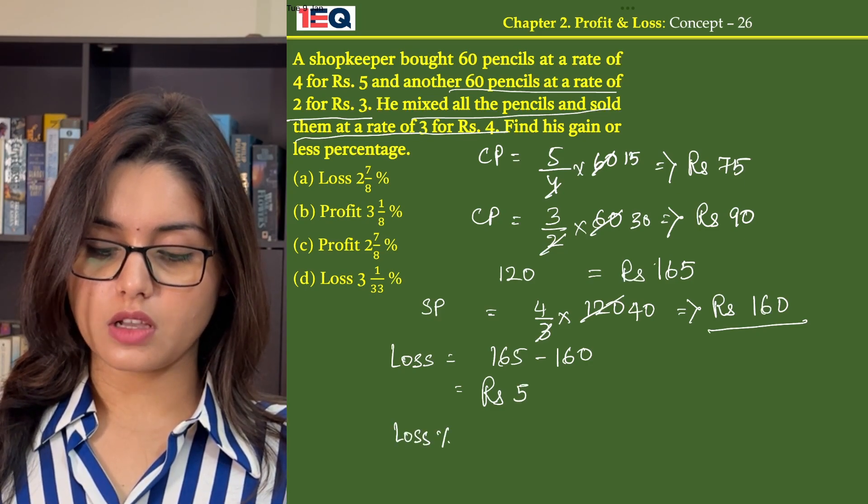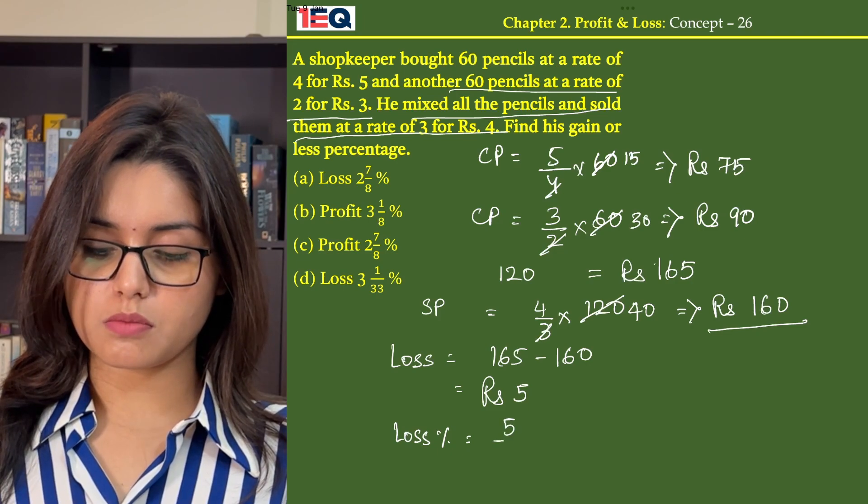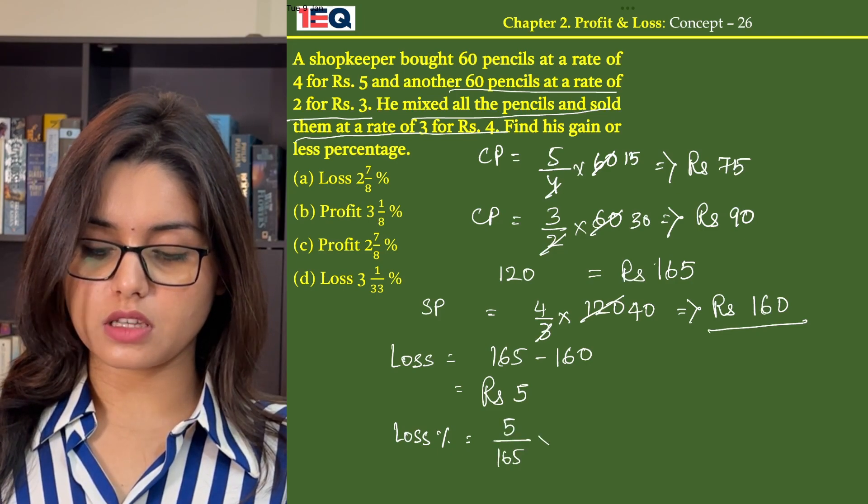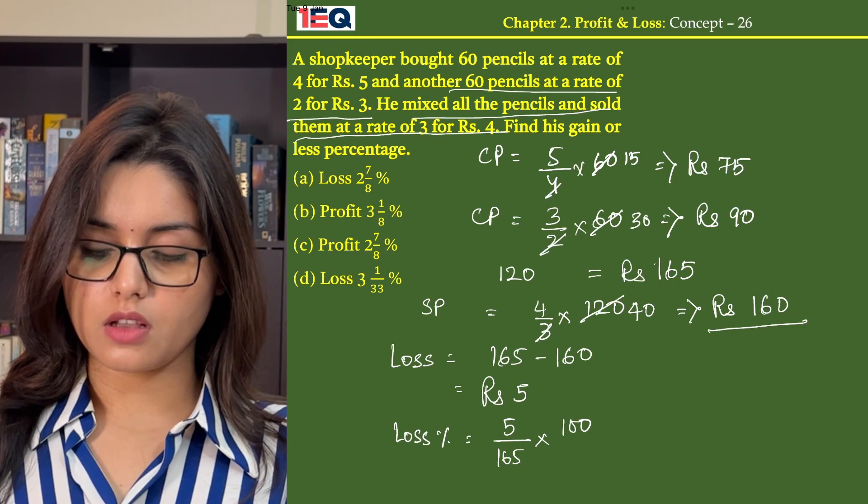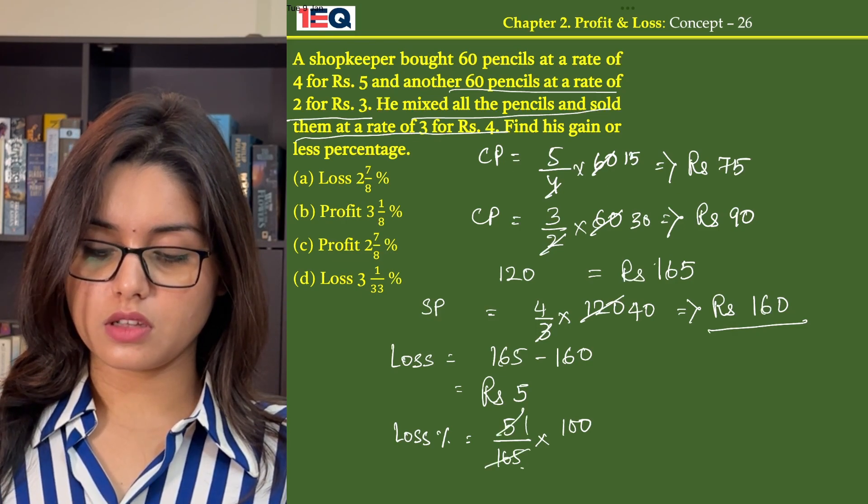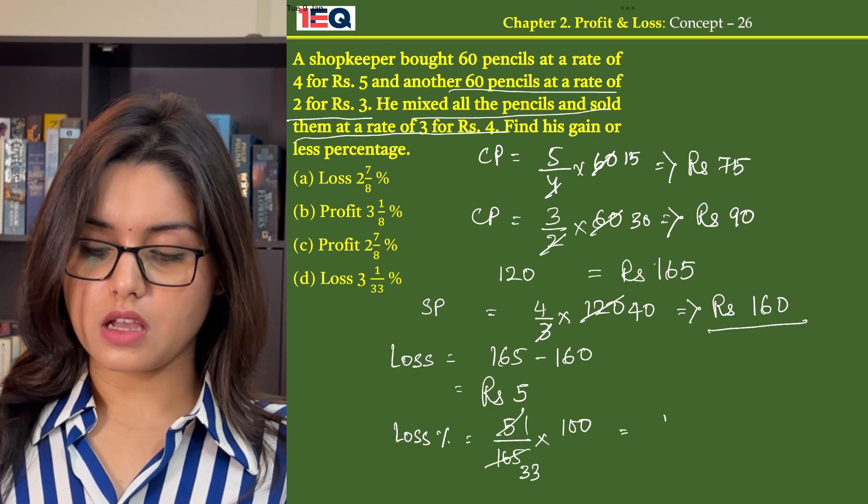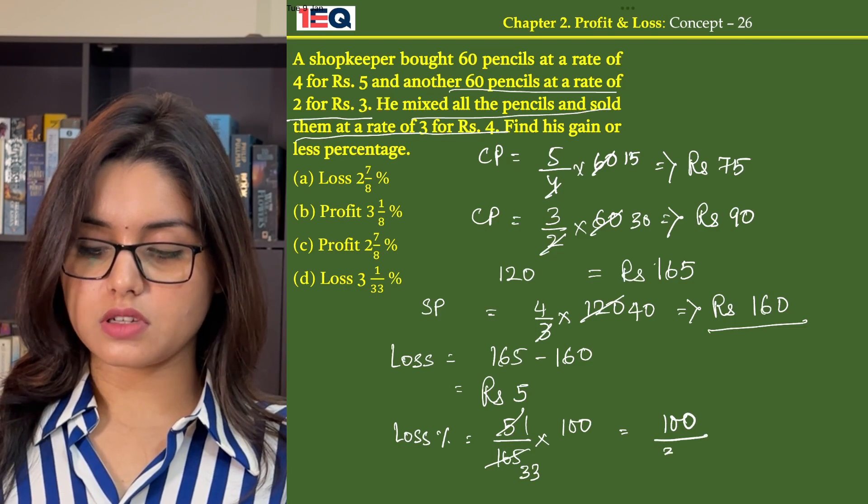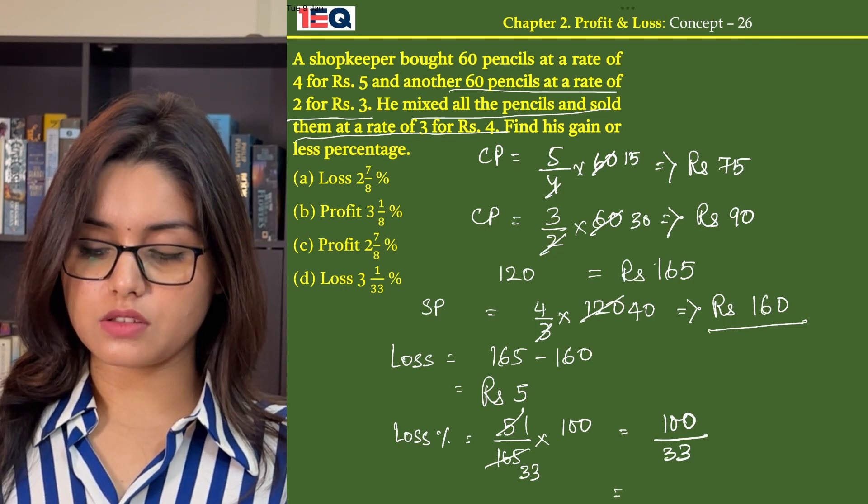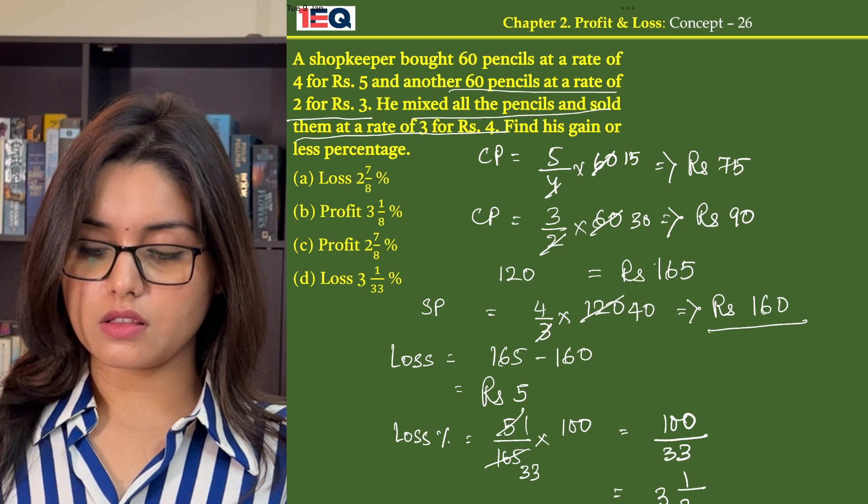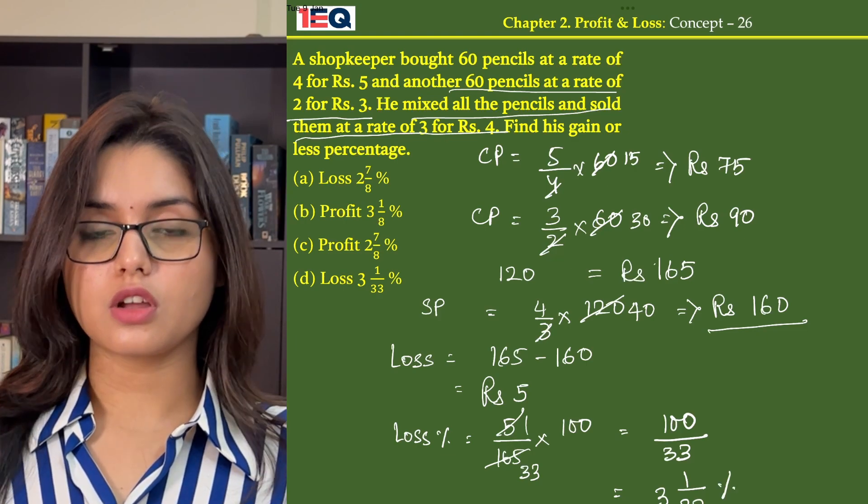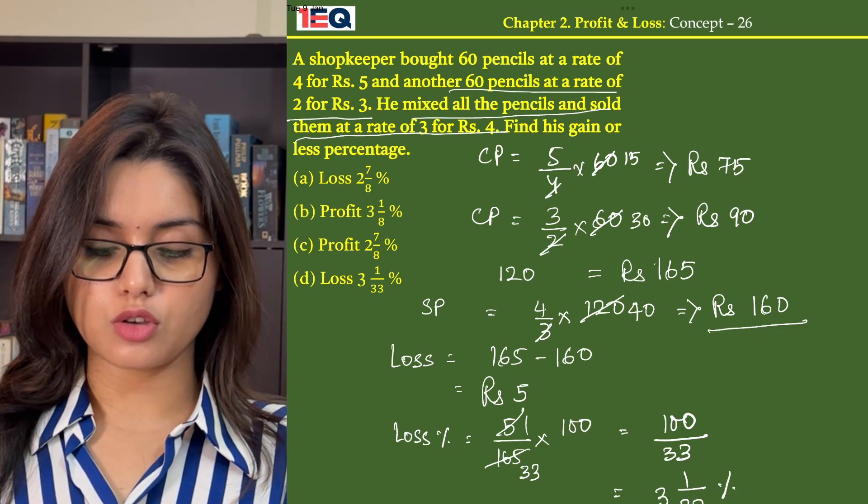Loss percentage equals loss by cost price into 100. That is 5 by 165 into 100, which is 100 by 33, giving us 3 and 1 by 33 percent loss. So our answer is option D.